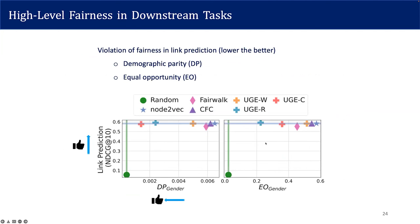We also study whether embeddings from our method can lead to fair results in downstream tasks. Specifically, we use demographic parity and equal opportunity in the link prediction task for fairness evaluation, where for both metrics the lower the better. The top-left corner again means the ideal balance of fairness and utility. Our proposed UGE achieves better fairness while still maintaining high utility.